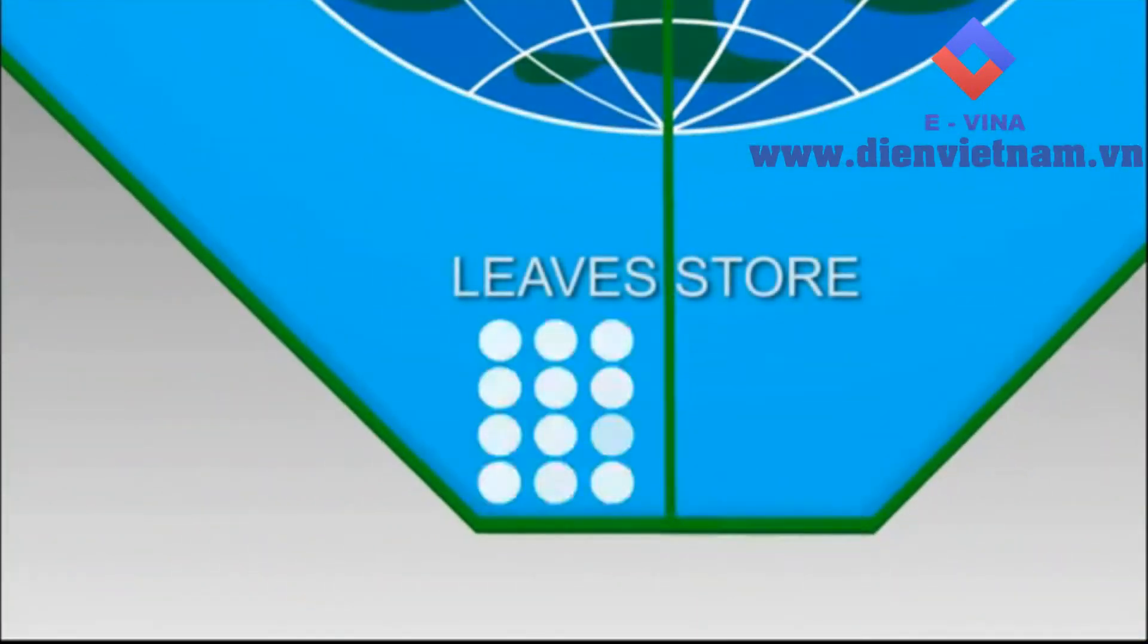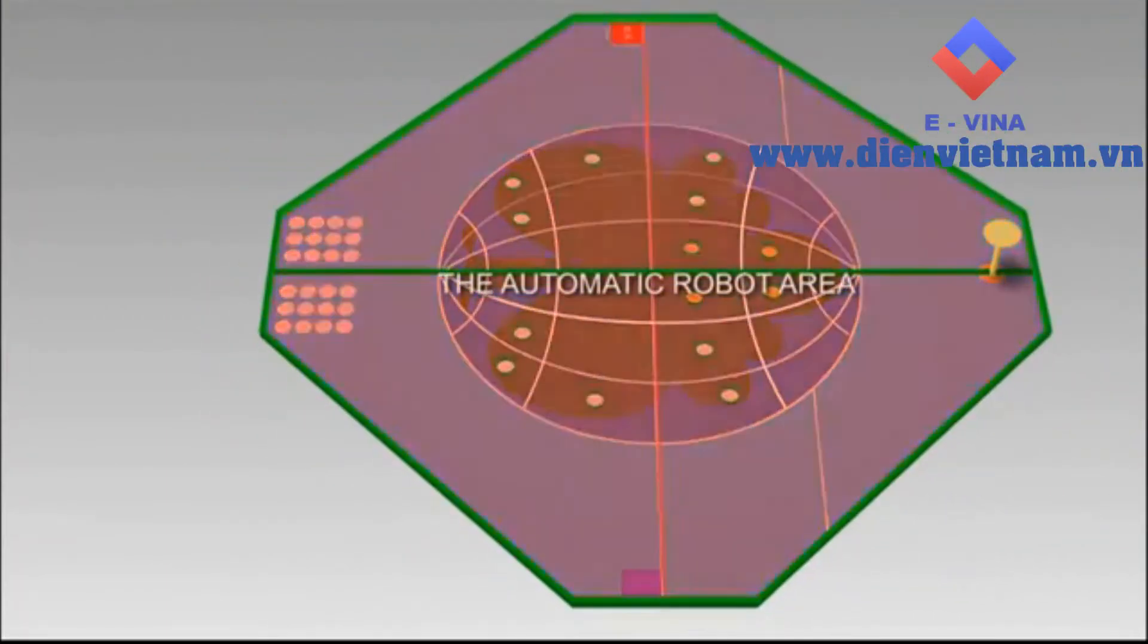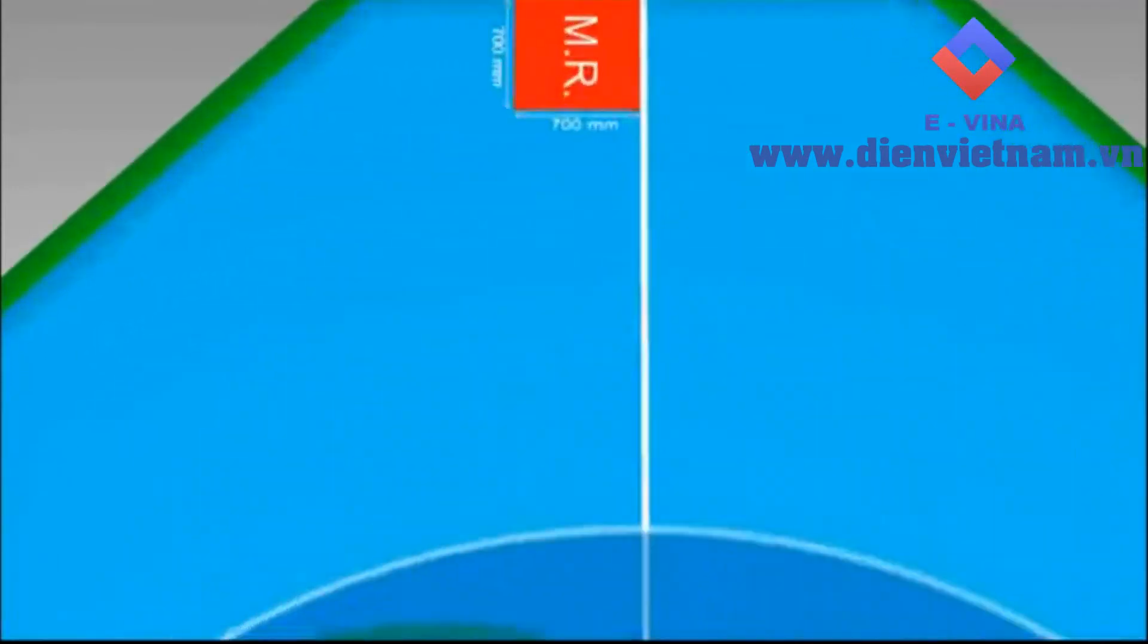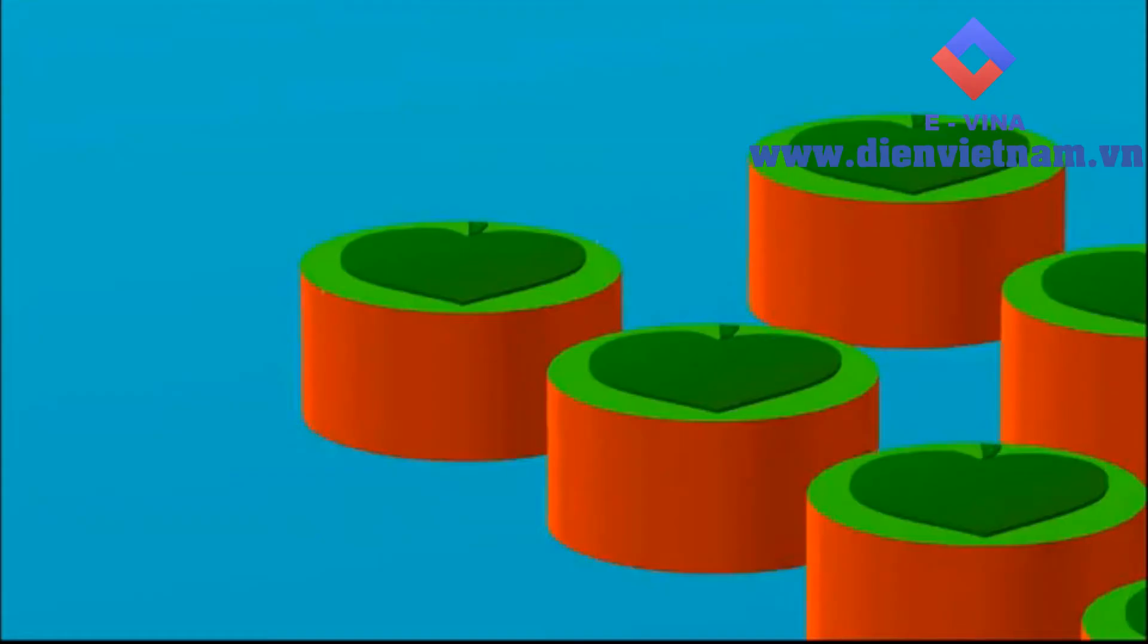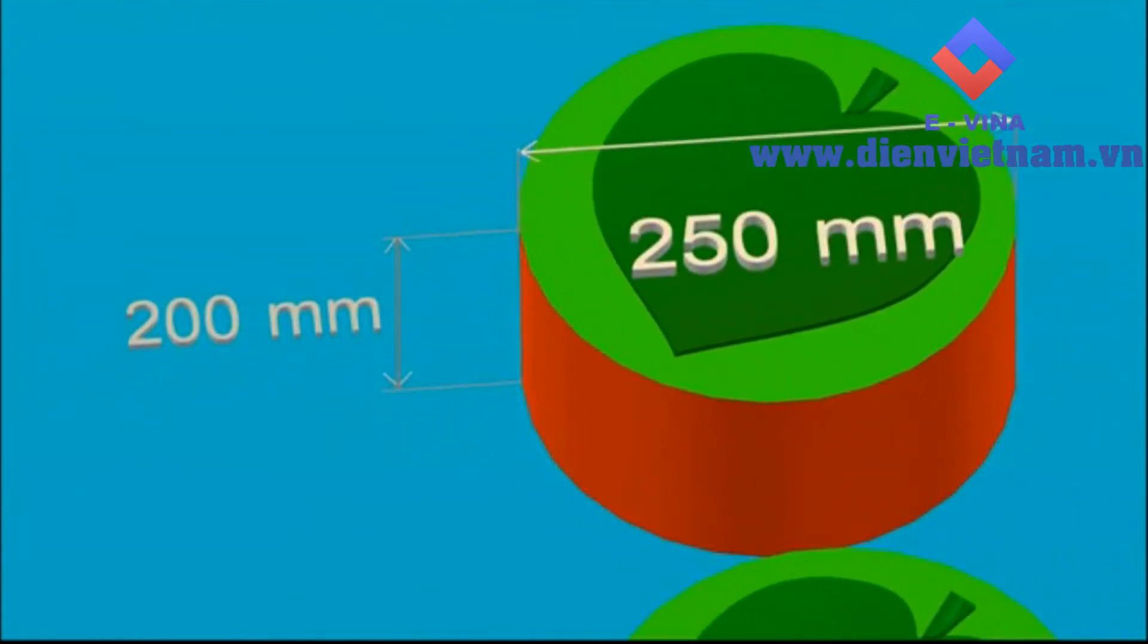Each team's leaf store is located at the bottom of the game field. The automatic robot area is the Earth Zone and the surrounding area. There are two automatic robot starting zones next to manual robot starting zones. Leaves are in the shape of a cylinder, 200 millimeters in height, 250 millimeters in diameter.